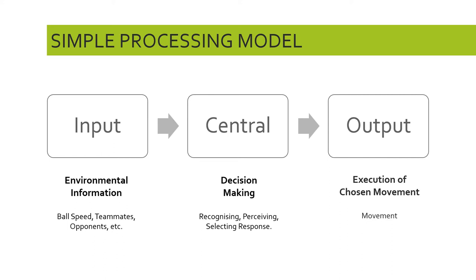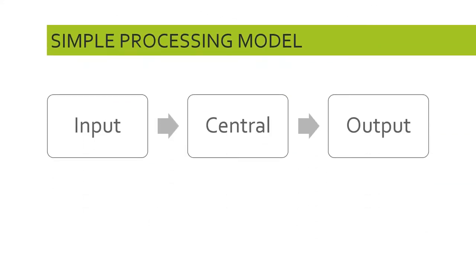The execution of the movement is the third and final stage of the simple processing model. So: information from the environment comes in as inputs, we process it and make a decision internally about what to do, then we execute that movement. Input, central, output. Once you've performed your skill, you've accessed the external environment through your senses, that information has come in as an input, and you've made a decision on a skill and done your best to perform it.